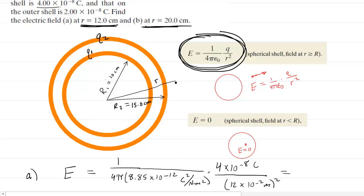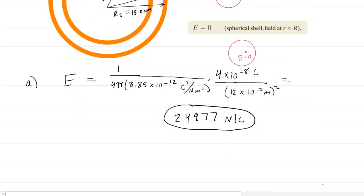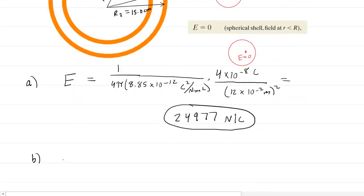Notice that the charge on both of the spherical shells is positive, so that will mean that the electric field direction will be the same. That means we can simply add the two fields together. So here we go in part B—we're going to be applying this Gauss's law result twice.